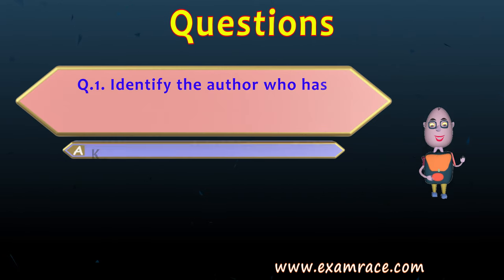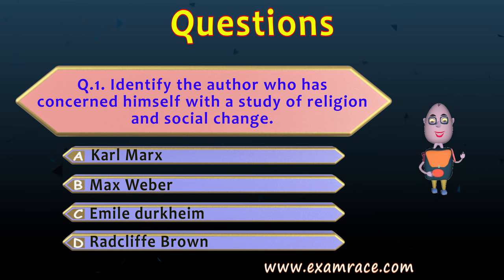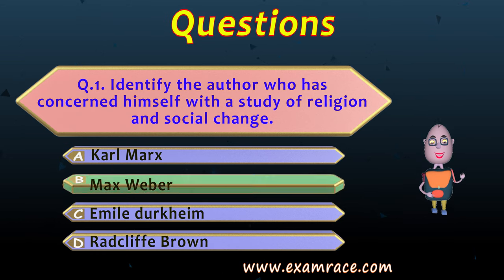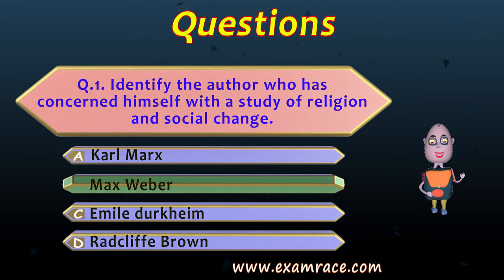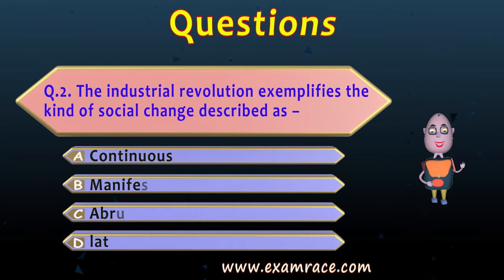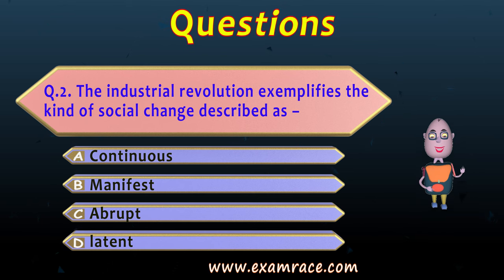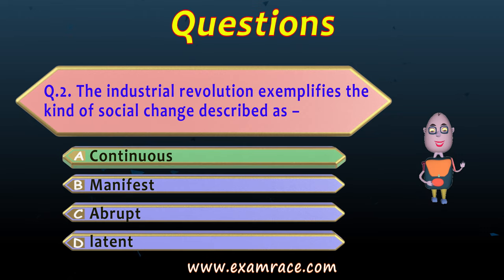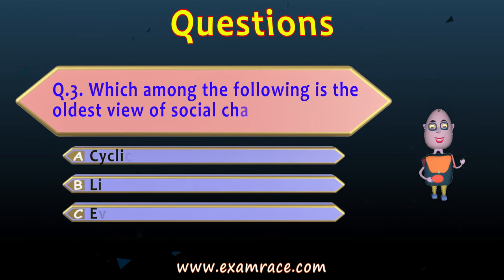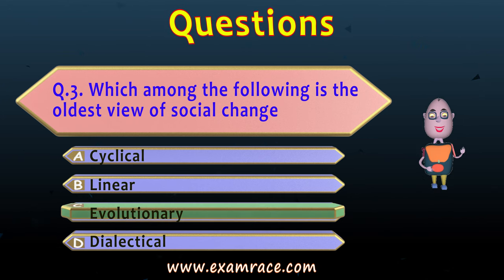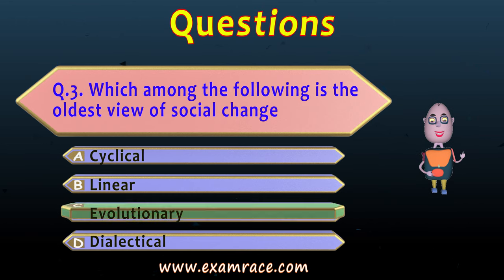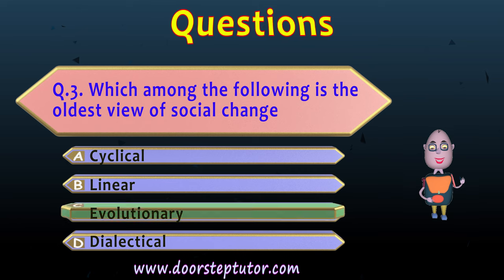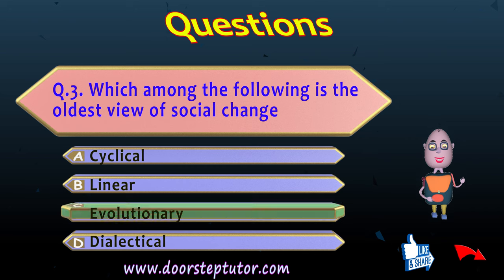Let us discuss some questions. First: identify the author concerned with the study of religion and social change. The answer is Max Weber, who talked about both religion and social change — if you remember Protestant ethics, you will understand this. Second: the Industrial Revolution exemplifies what kind of social change? The changes after the Industrial Revolution were slow at first but then occurred at a very high and continuous rate, so the answer is A — continuous. Third: which is the oldest view of social change? The answer is Evolutionary, because at that time there were no facts; theories were based on experiences and the evolution of social sciences.